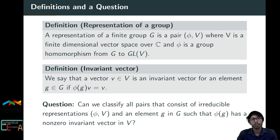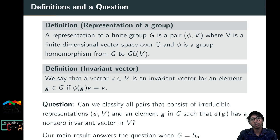We can ask: can we classify all pairs consisting of an irreducible representation (V, φ) and an element g in G such that φ(g) has a non-zero invariant vector in V? We answer this question when G equals Sn.